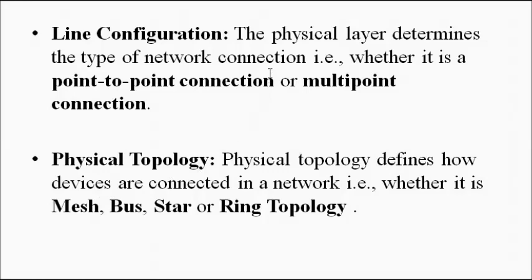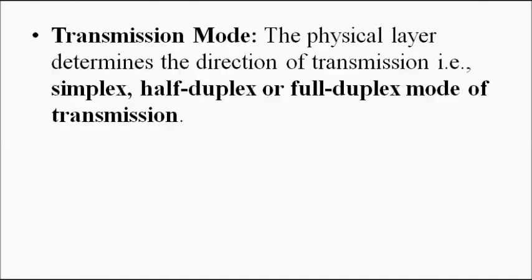Fifth is line configuration. All devices or nodes are part of a network, and whether the connection is point-to-point or multi-point is covered by the physical layer — this is referred to as line configuration, and has been discussed in the introductory videos. Also, network topology — the pattern in which devices are connected, such as mesh, bus, star, or ring topology — is handled by the physical layer.